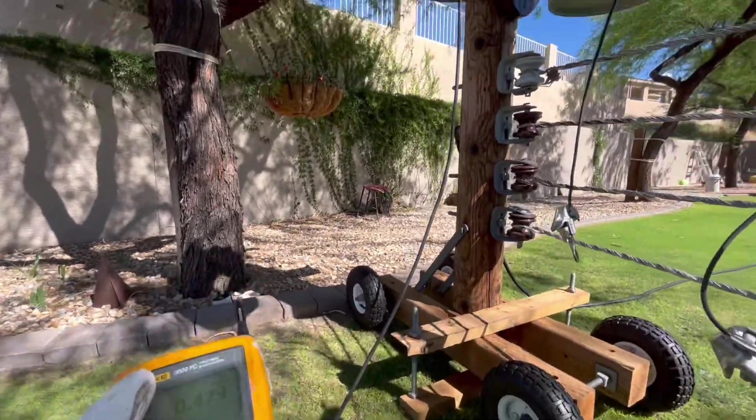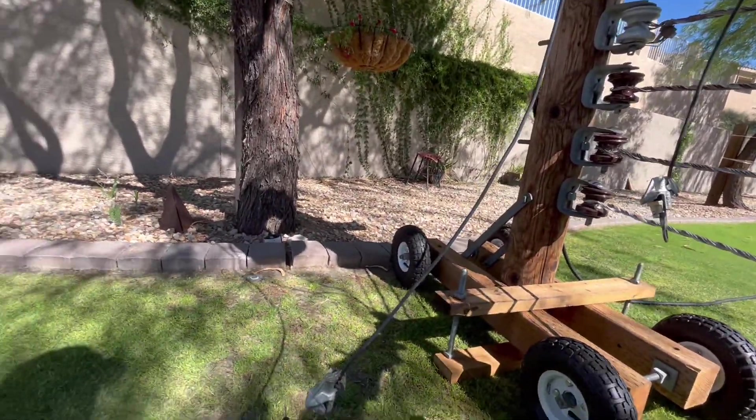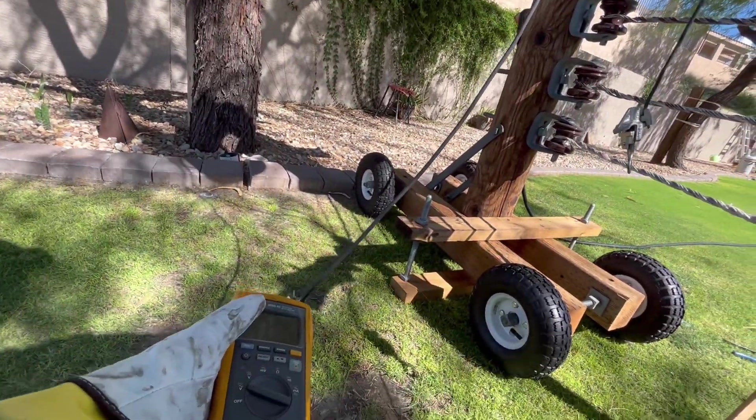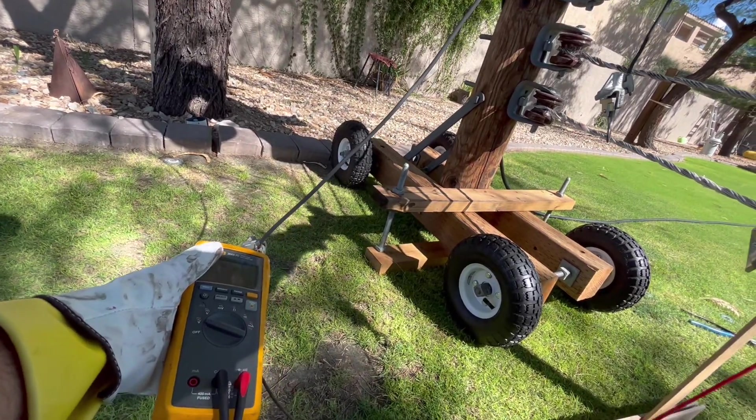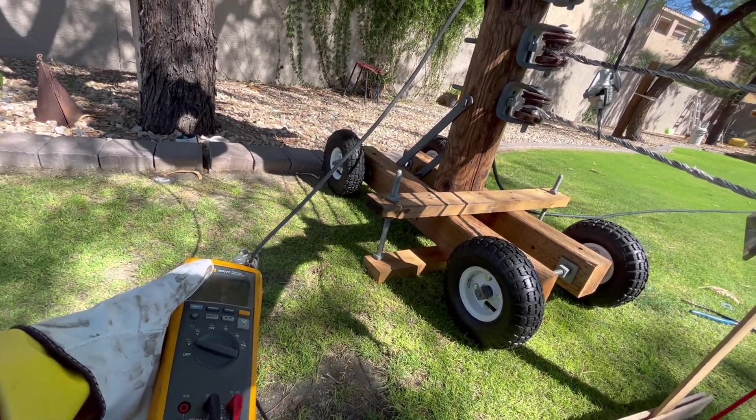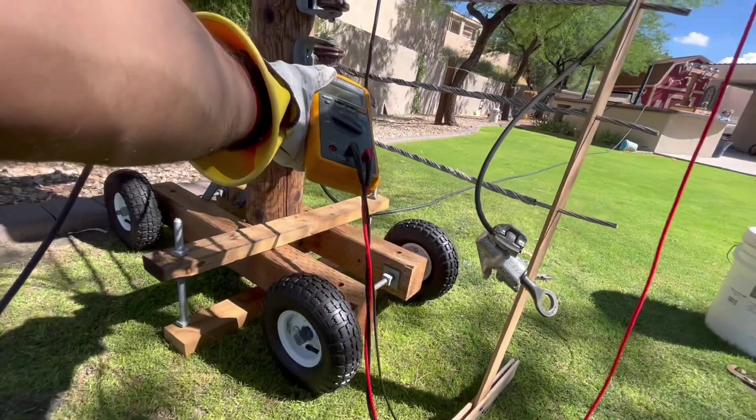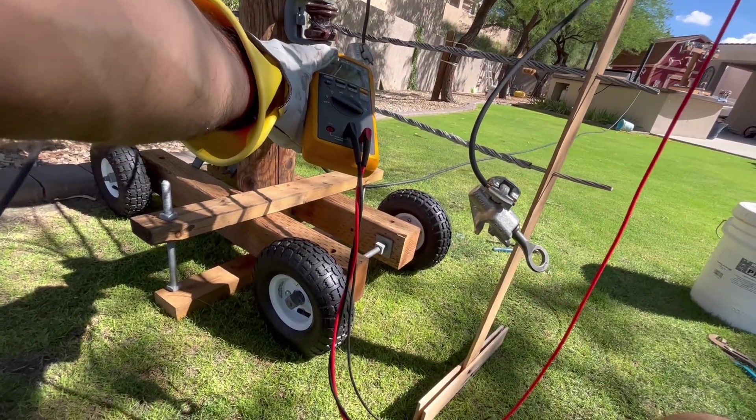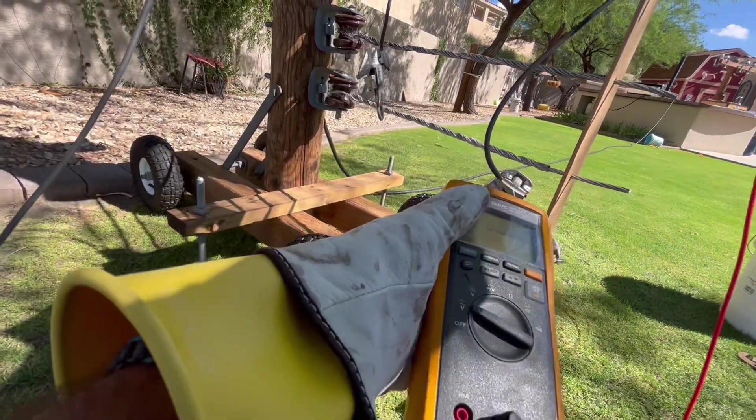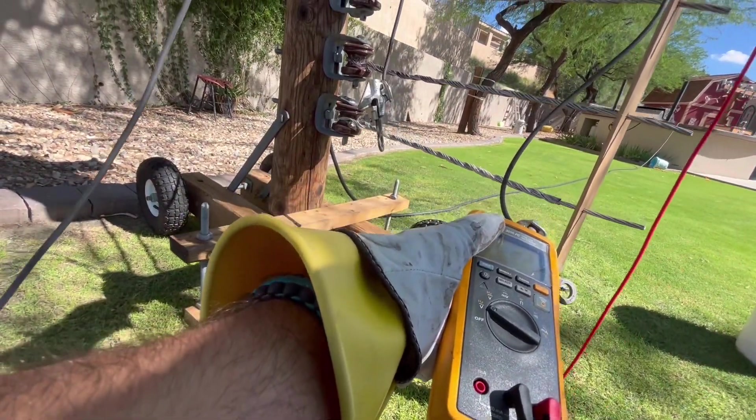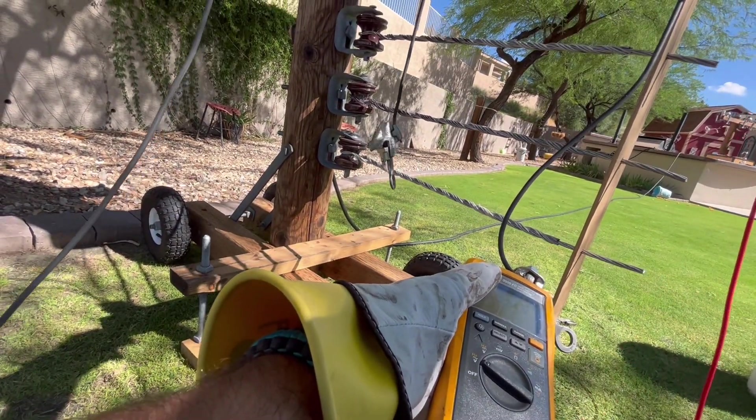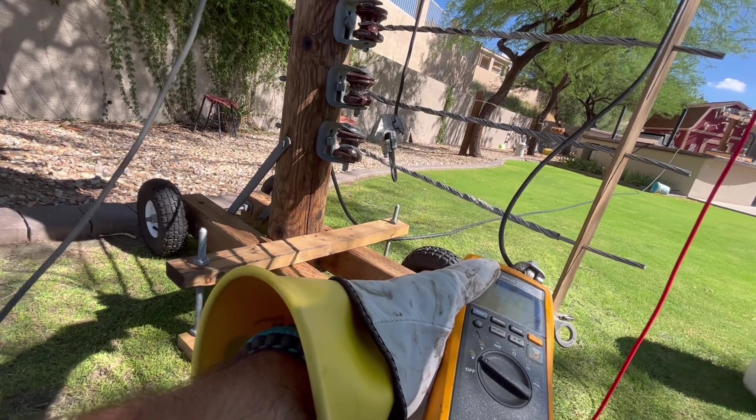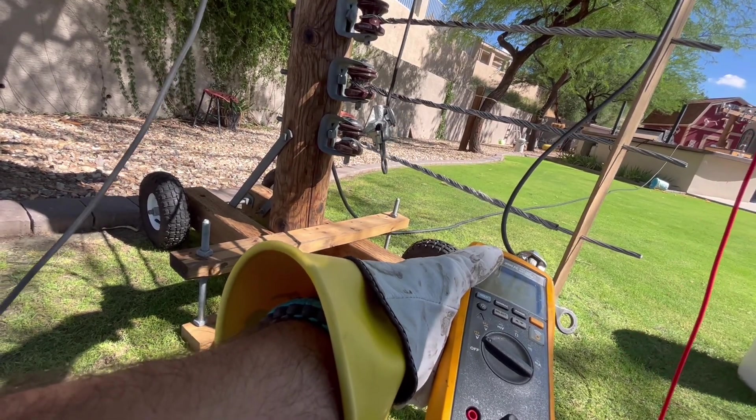So the first step is I'm going to check all of my phase to neutral voltages, being sure to identify my wild leg. So I've got 122. 123. And this should be my wild leg. It's a little high, 224. But hey, it's a simulator, so whatever. It should be 208.